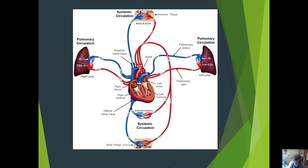As far as oxygenation of the blood is concerned, the right side of the heart carries deoxygenated blood and the left side carries oxygenated blood. So the right atrium, tricuspid valve, and right ventricle are deoxygenated, while the left atrium, mitral valve, and left ventricle are oxygenated.